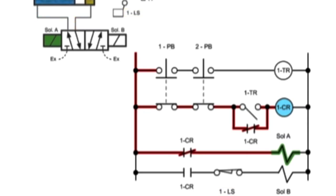At this point in the cycle, the cylinder will remain extended indefinitely until at least one push button is released. If one push button is released, the control relay will lose power, which causes 1-CR to remove power from solenoid A and connect power to solenoid B.